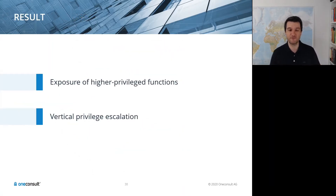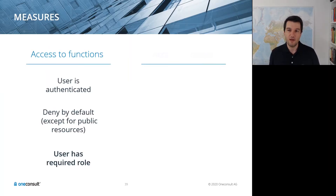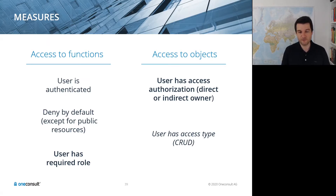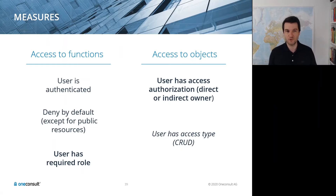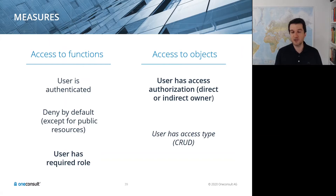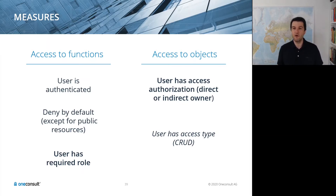The result is exposure of high-privilege functions and possible vertical privilege escalation. Measures to prevent authorization issues: access to functions should always verify the user is authenticated. API endpoints should deny access by default, except for resources that truly need to be public. Ensure the user has the required role for the current function, and that for object access, the user is the direct or indirect owner and is permitted the specific action — create, read, update, or delete. Most importantly, never rely on client apps to enforce authorization; always recheck server-side for each reference.